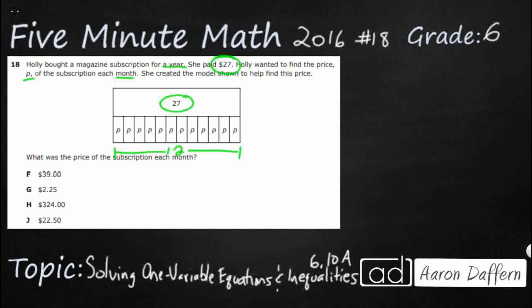What we are looking for is how we can find P, which is just one month's subscription. This is going to be a pretty simple equation. We are using an equation because we are looking for an exact answer — we are not looking for something that is greater than or less than. So P is our monthly price.